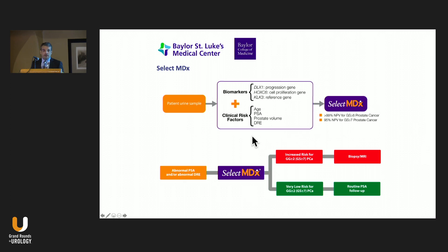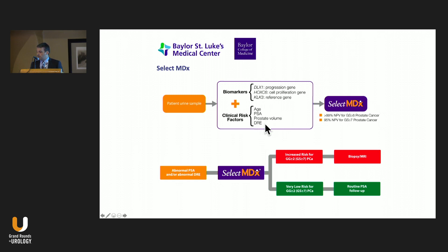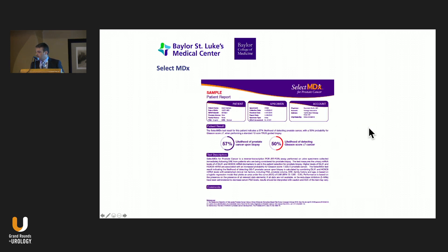SelectMDX is done also in the urine and also requires a prostatic massage. They look at two genes using mRNA-based analysis: DLX1 and HOXC6. They also combine in their algorithm some clinical variables, and they have very high negative predictive value — 95% NPV for at least Gleason 7 prostate cancer. A sample report shows the likelihood of cancer and cancer with Gleason 7 or higher.